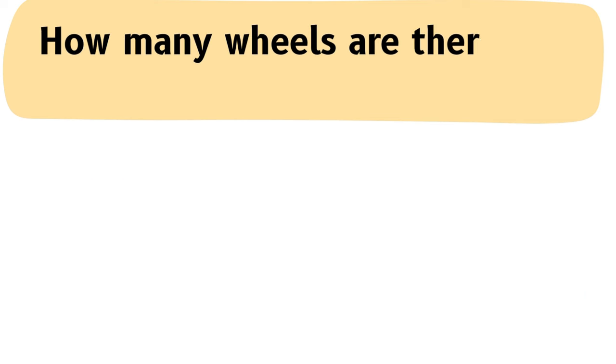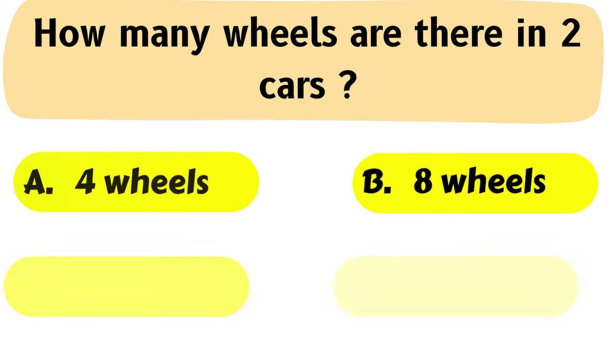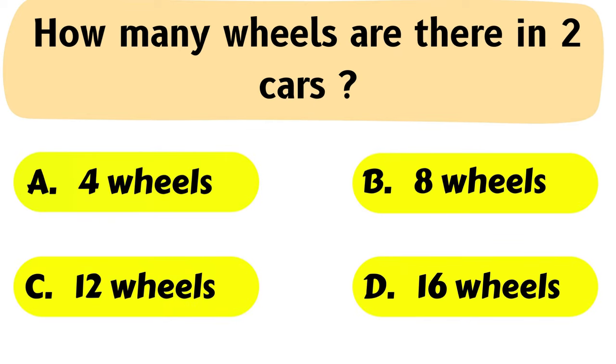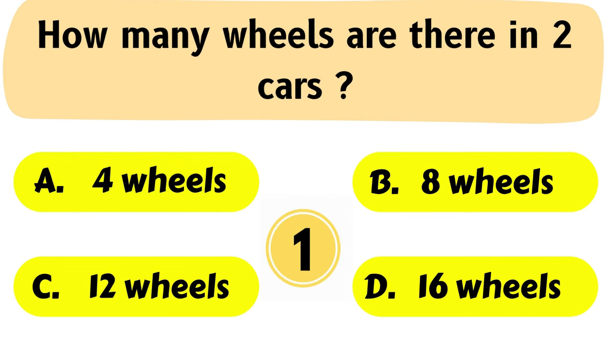Question No. 45: How many wheels are there in 2 cars? A. 4 wheels, B. 8 wheels, C. 12 wheels, D. 16 wheels.